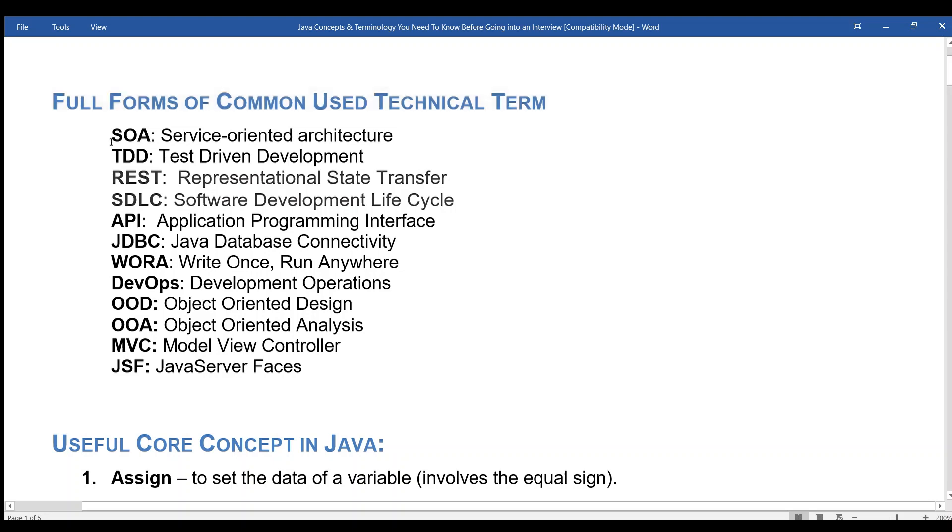Full forms of common use technical terms: SOA - Service Oriented Architecture, TDD - Test Driven Development, REST - Representational State Transfer, SDLC - Software Development Life Cycle, API - Application Programming Interface, JDBC - Java Database Connectivity.